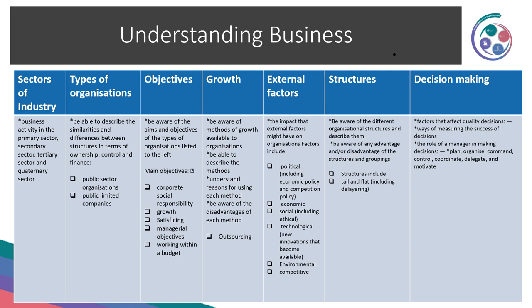Then we've got objectives — be aware of the aims and objectives of the different types of organisations, so the objectives of a public sector and a public company. Then we've got growth — the only growth topic that looks like it's coming up is outsourcing. Then external factors, structures including tall, flat, and delaying, and decision making. We're going to run over some of these today and look at what style of questions are likely to come up.